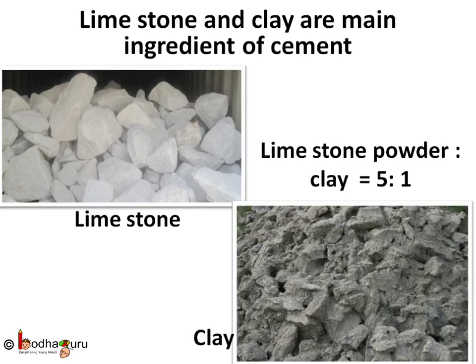Like bricks and tiles, the making of cement is a long process too. Limestone and clay are the main ingredients of cement. The limestone powder and clay are mixed in a 5 to 1 ratio — that is, 5 times limestone and 1 times clay. Then the mixture is ground to a fine powder. This step is called pulverization.